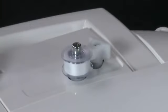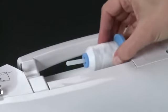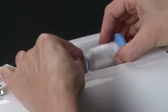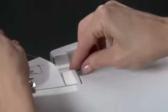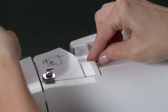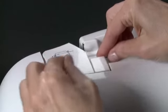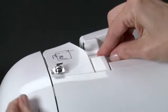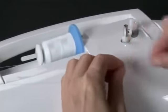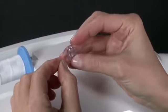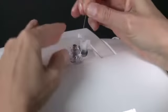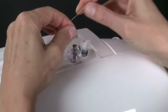To wind the bobbin, the machine can either be set up in standard sewing mode or with the embroidery unit attached. Place the thread spool onto the spool pin and secure it with the appropriately sized spool cap. Pull the thread out from the spool and place it through these thread guides. First in front of this guide, then into this guide, and then around the bobbin winding tension disc. Pull the end of the thread through the hole in the bobbin.